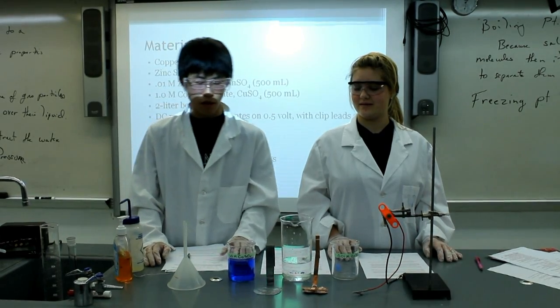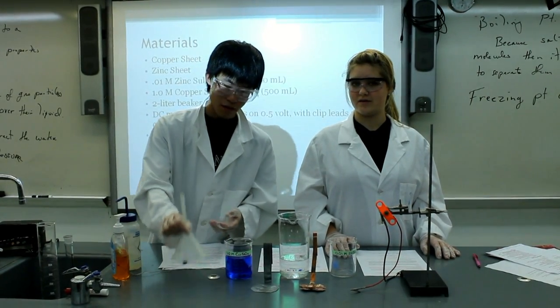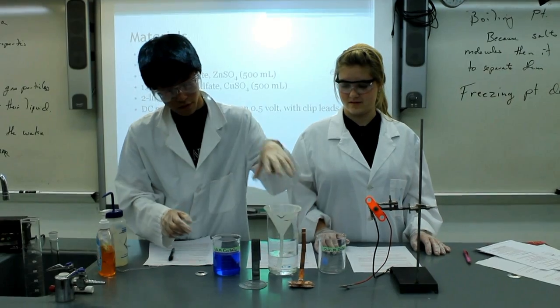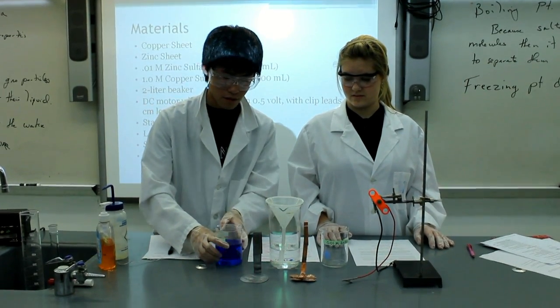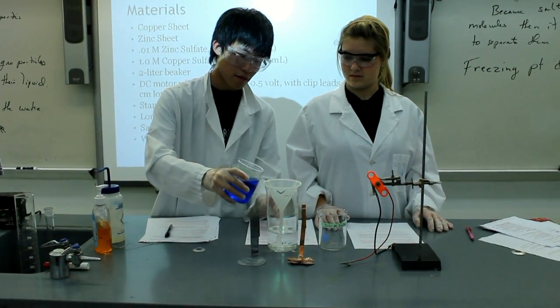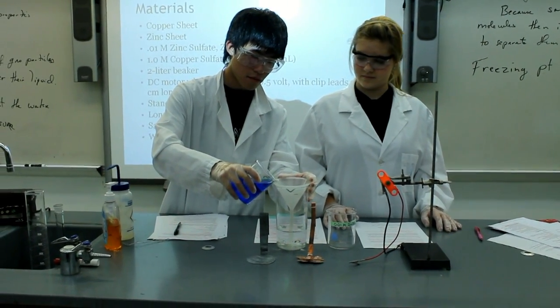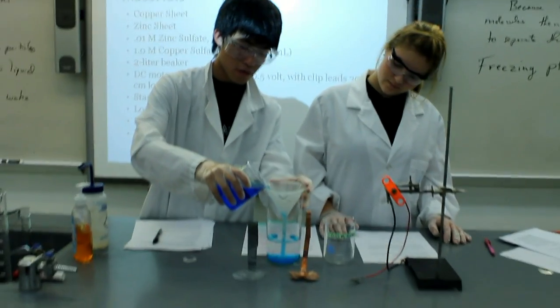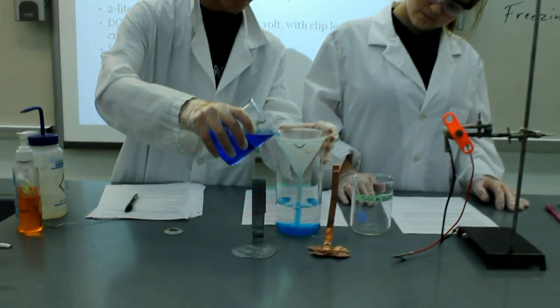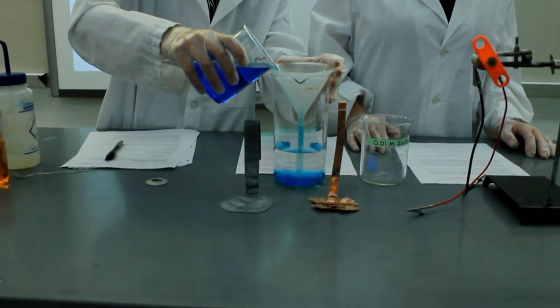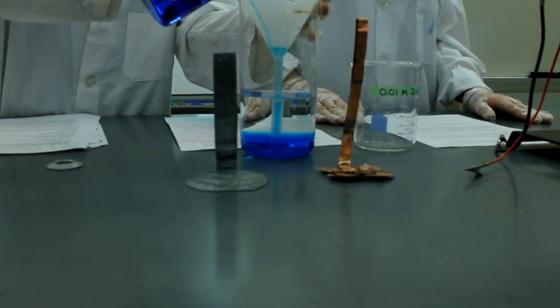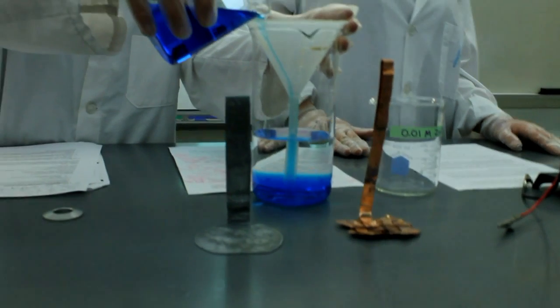Next, we add one molar copper sulfate solution through a long stem funnel. We have to do this because the solution must be below the zinc. Because the copper solution is more dense than the zinc solution, the zinc solution will float above it. The solution must be added slowly to prevent as little mixing as possible.